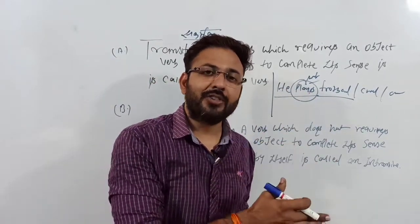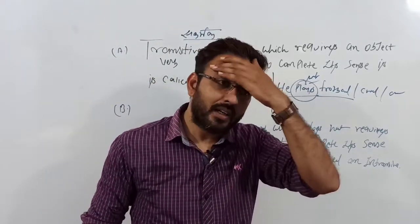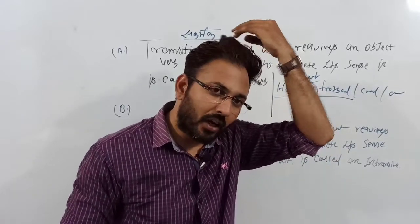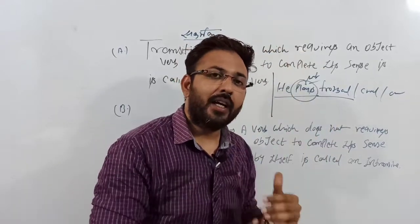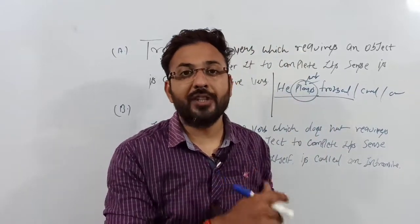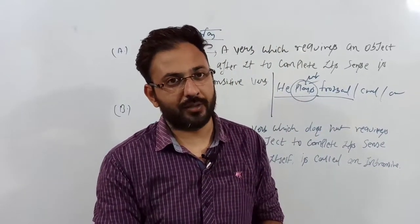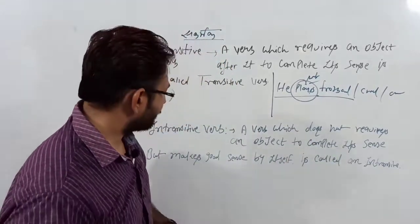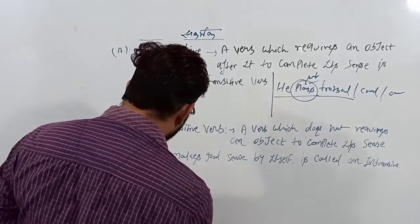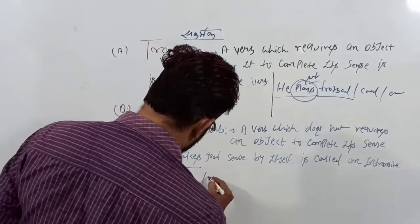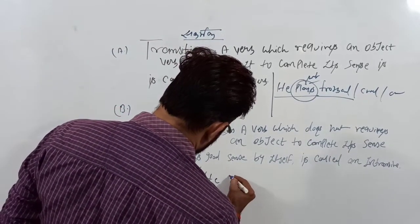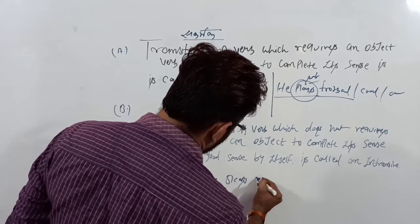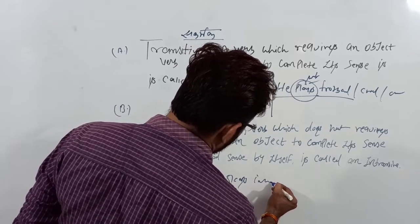An intransitive verb does not take an object. For example: 'He sleeps in the bed.' The verb 'sleeps' does not require an object — the sentence is complete on its own.